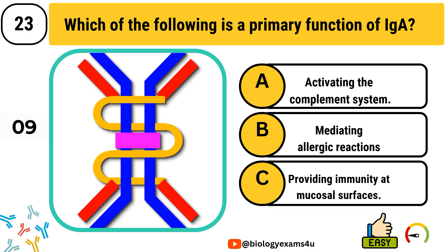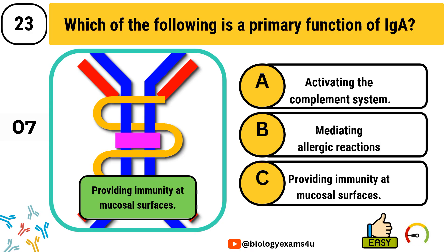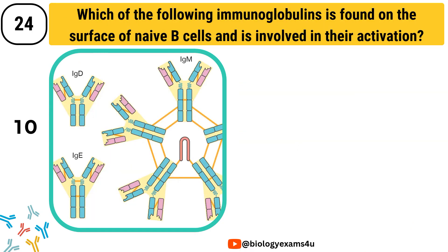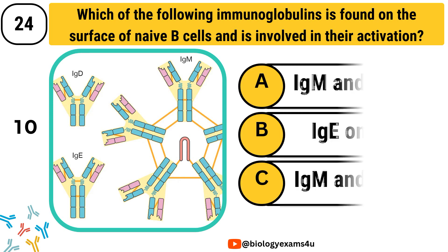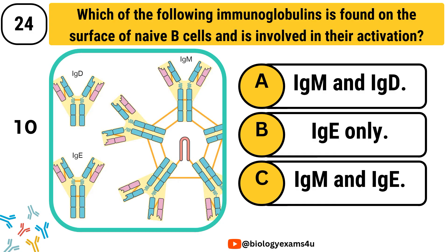Question number 24. Which of the following immunoglobulins is found on the surface of naive B cells and is involved in their activation? Option A, IgM and IgD. Option B, IgE only. Option C, IgM and IgE. The correct answer is IgM and IgD.